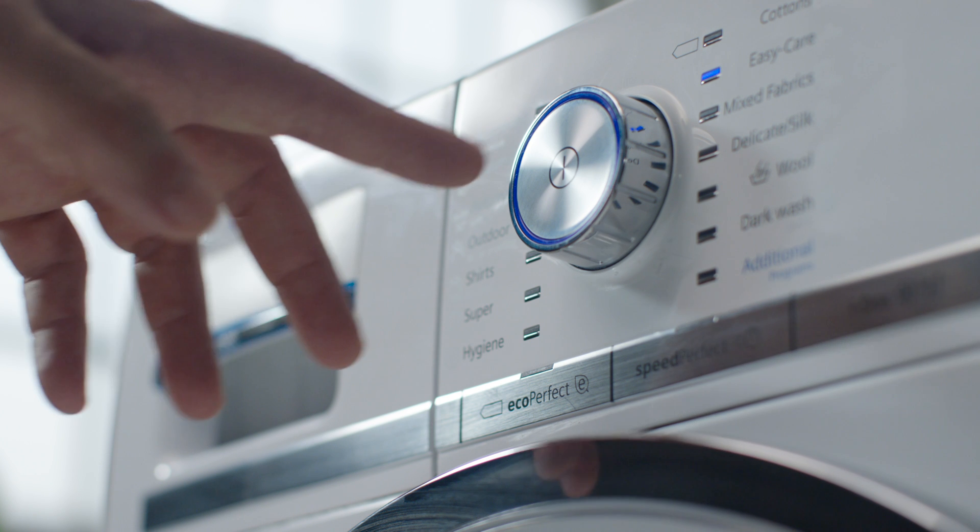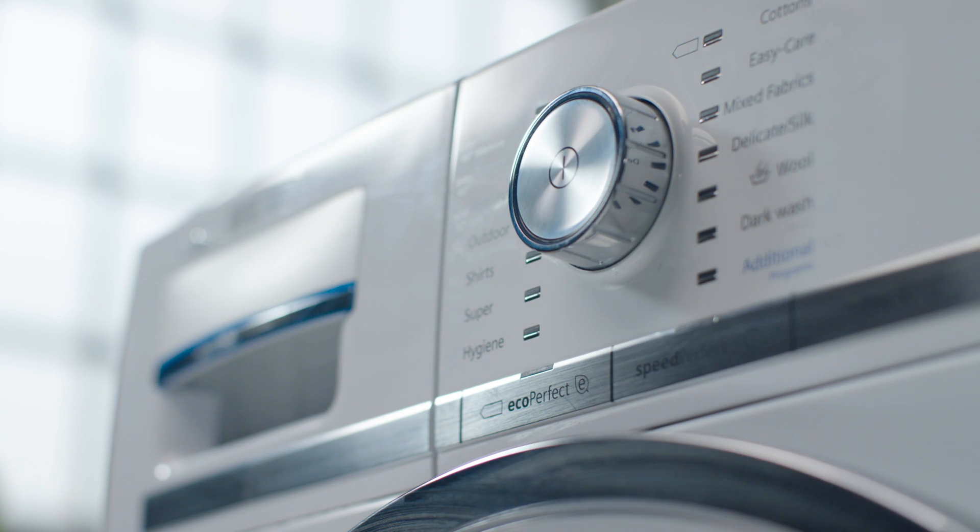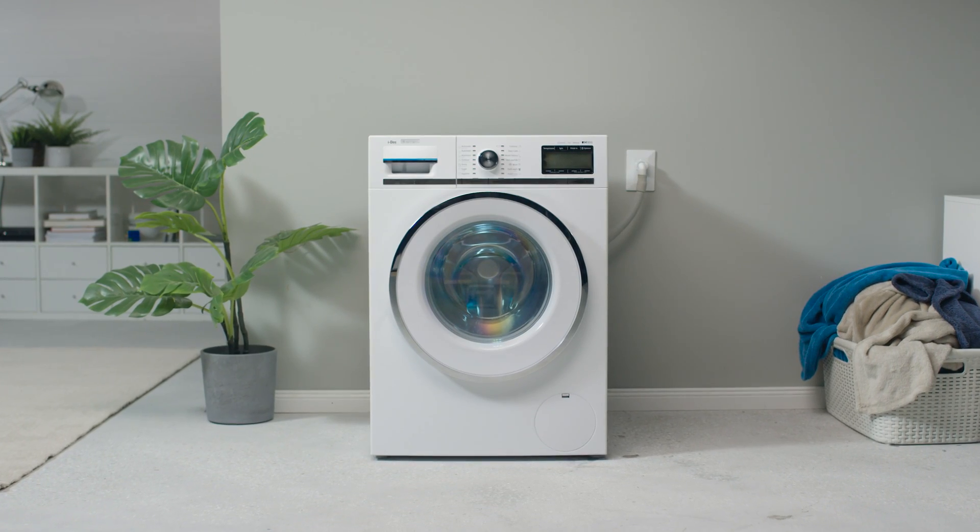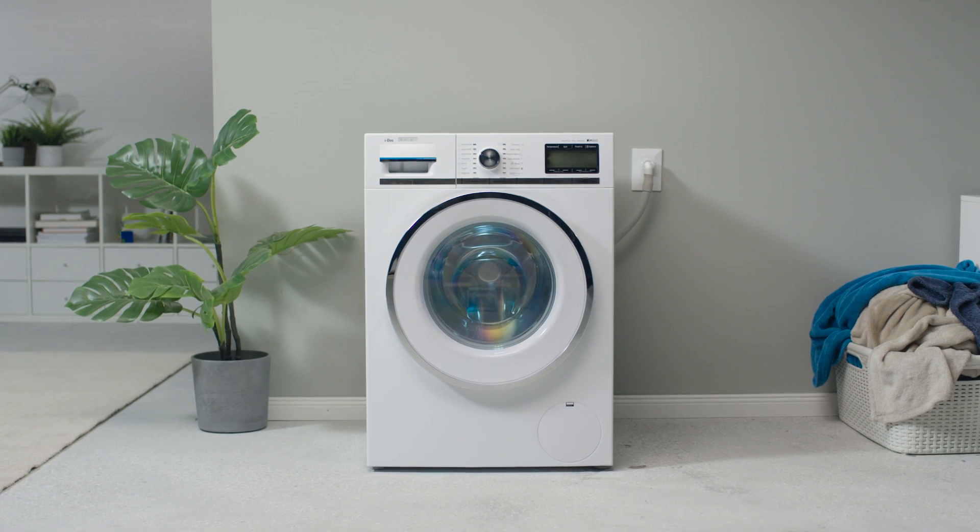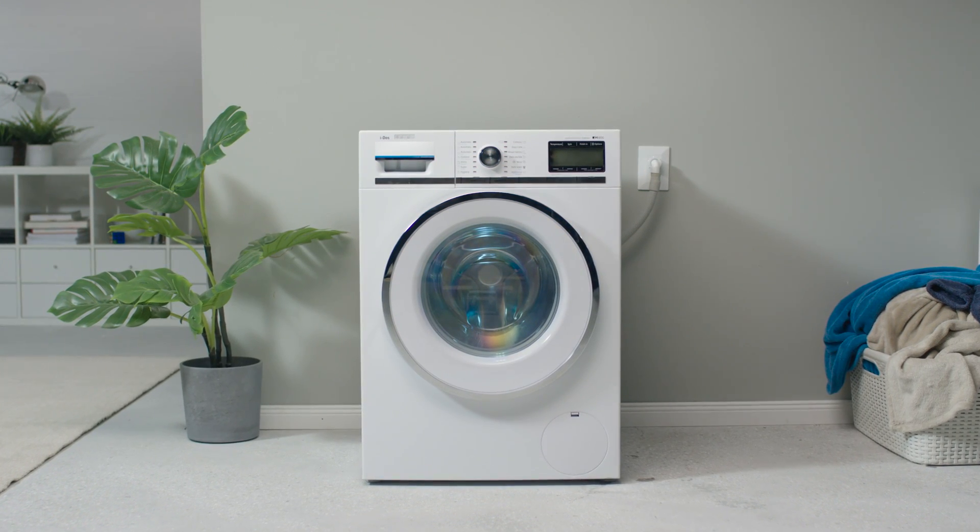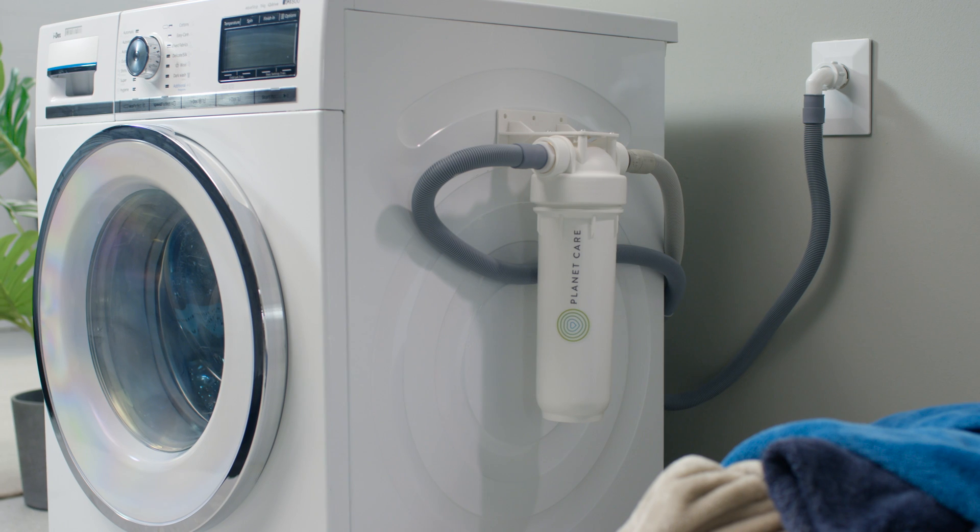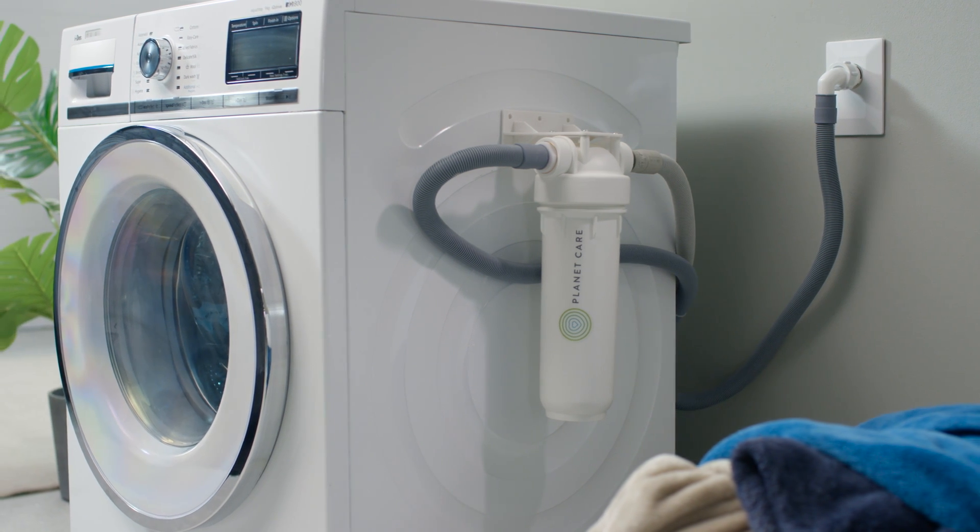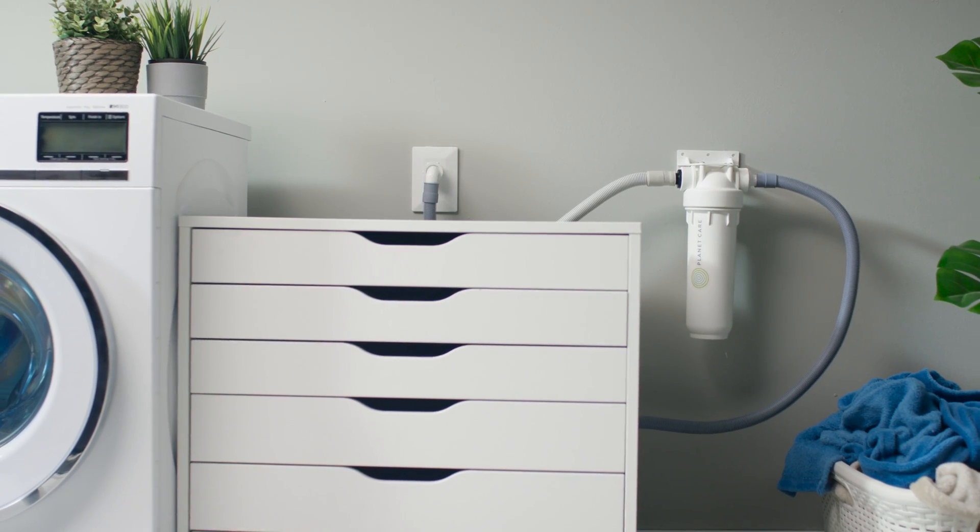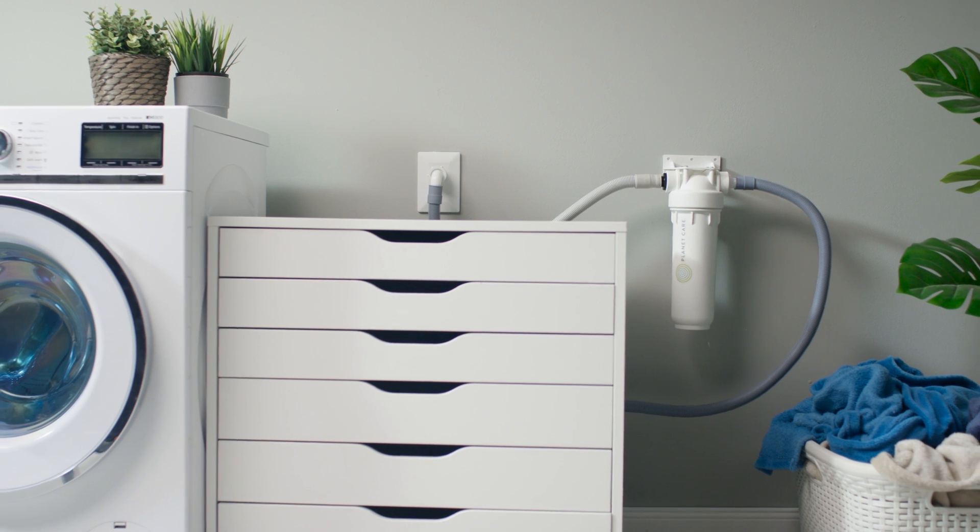Make sure your washing machine is switched off before you start. Choose where to place your filter. If you have the space, you can attach the microfiber filter to the side of your washing machine. If there isn't enough space, you can simply attach it to a wall nearby.